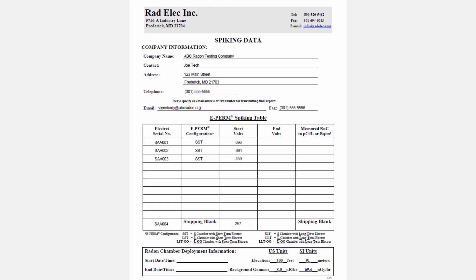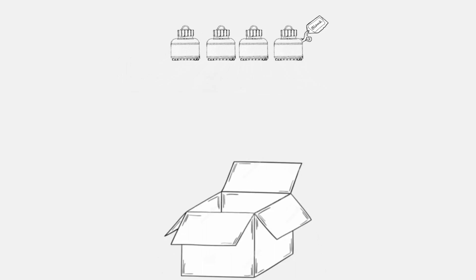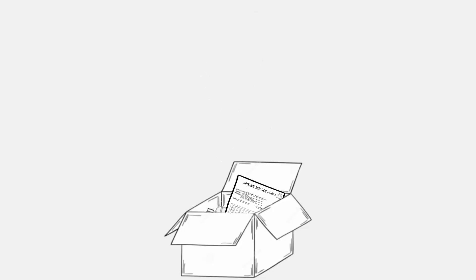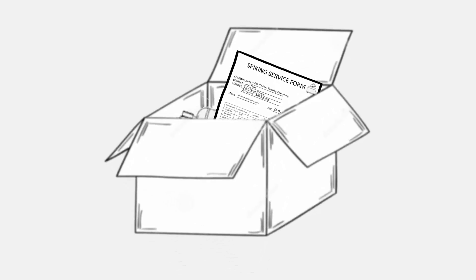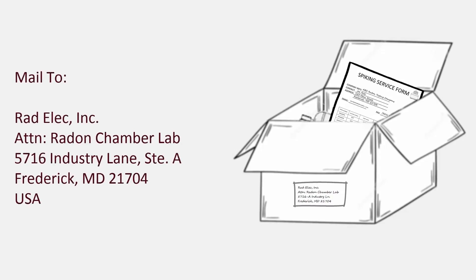There are links located in the description of this video and in the Frequently Asked Questions segment near the end. Now it's time to mail the detectors. Do one last quick check to make sure that they're all closed and that any shipping blanks you're sending are properly labeled. Carefully pack them into a box along with some padding such as newspaper or bubble wrap, and remember to include a copy of the spiking service form. Mail it to our office using any postal carrier you prefer to the address displayed here.